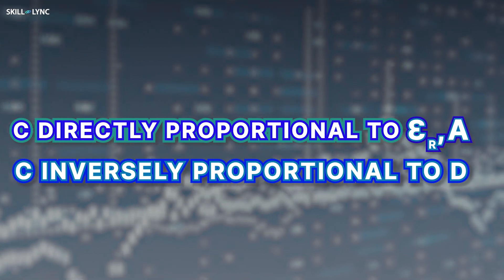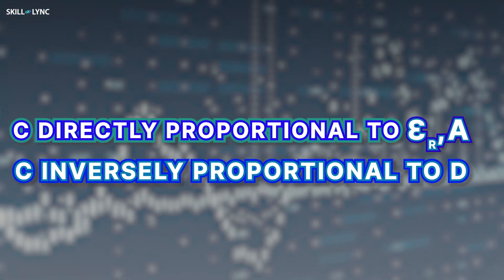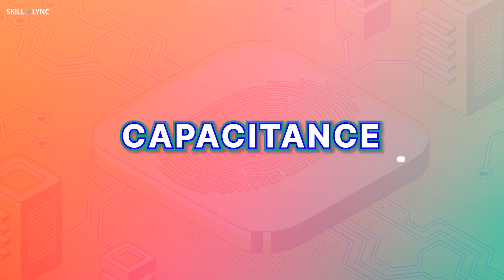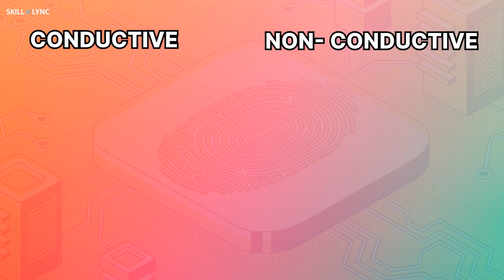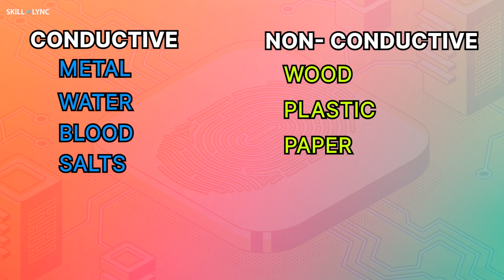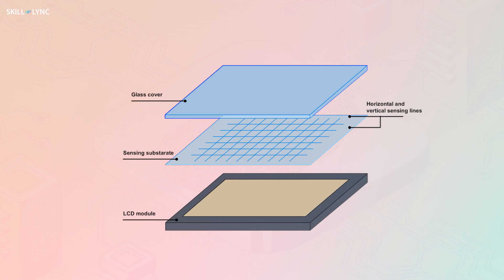As we can see from the formula, capacitance is directly proportional to the dielectric constant and the area of the plate, and inversely proportional to the distance between the two plates — that is, as the distance decreases, the capacitance increases. Capacitance sensors can detect the presence of both conductive and non-conductive targets. Conductive targets include metal, water, blood, and salts, while non-conductive targets are mostly insulating materials like wood, plastic, and paper.